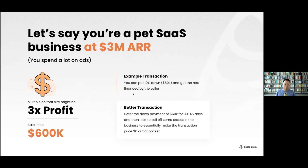Let's say you have $60,000. You can put 10% down and get the rest financed by the seller. On $60K down, you'd finance the remaining $540,000 over three to four years, possibly at zero interest. Or if you don't even have the $60,000, you could defer the down payment for 30 to 45 days, sell off some assets, borrow some money, and make the transaction essentially $0 out of pocket.